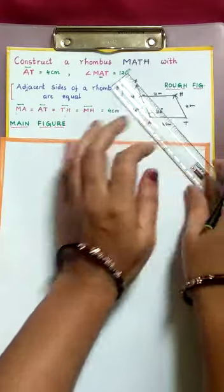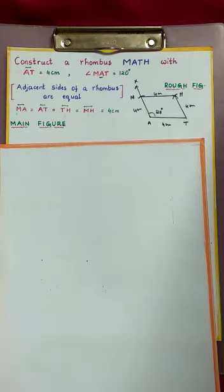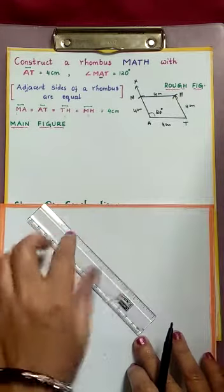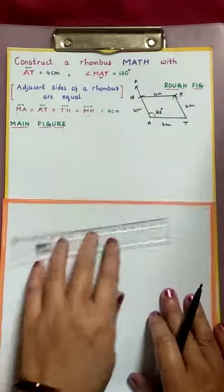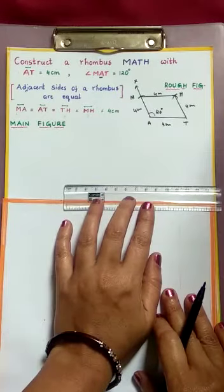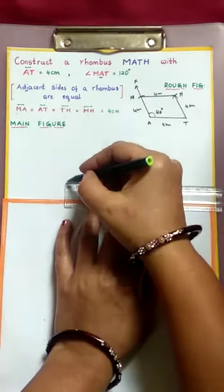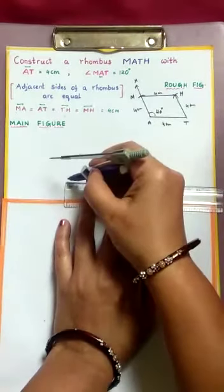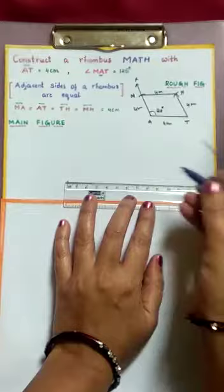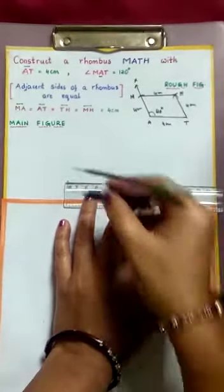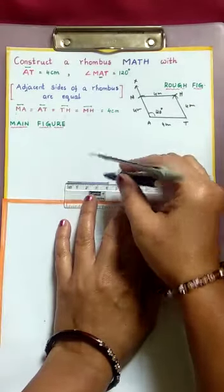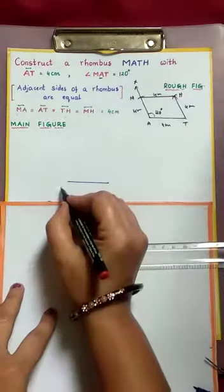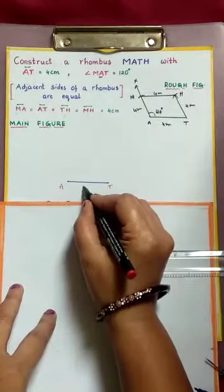See how easy, children. Since all sides are equal, let us do the main construction. Using the rough figure, first construct AT 4 cm. Starting point is at 0, ending point is at 4. Join and name it AT, 4 cm.